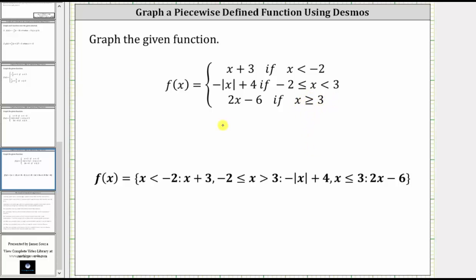We use the format shown below to graph a piecewise defined function in Desmos, where we have f of x equals, and then in curly brackets, we have the first interval colon the first function rule comma, the second interval colon the second function rule comma, the third interval colon the third function rule.